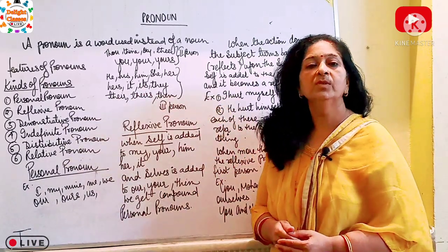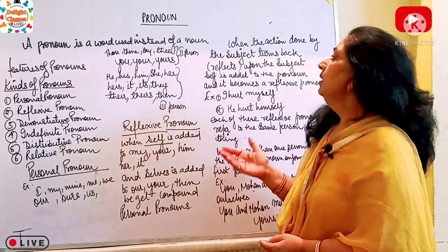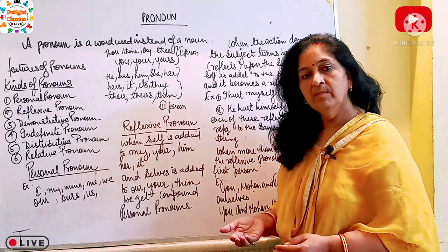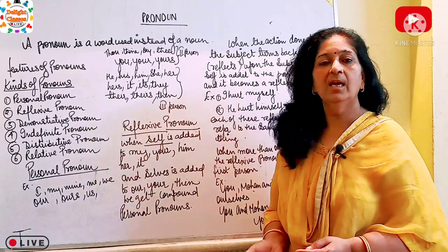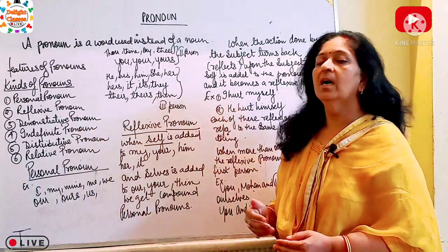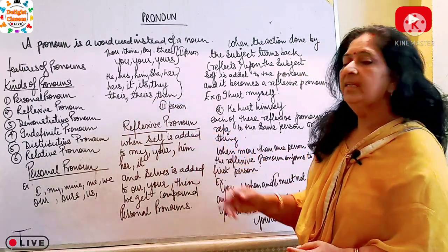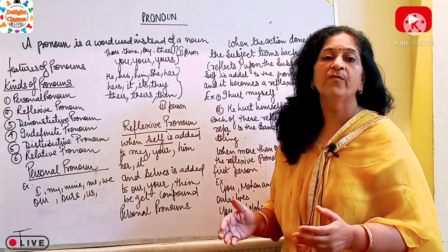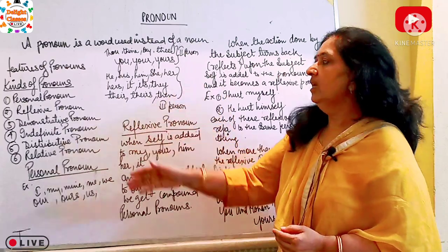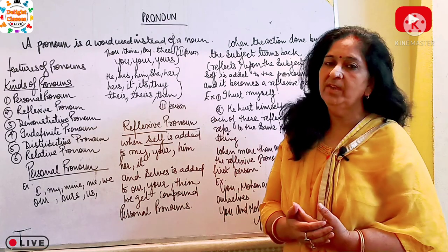Second person pronouns are: you, your, yours. And third person pronouns are: he, his, him, she, her, hers, it. All these are third person pronouns. So let's begin with the description — we have discussed about types of personal pronouns and I have given you the examples. Let's go in detail with reflexive pronouns.